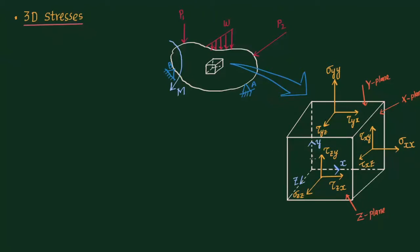I have only shown the stresses acting on these three planes. The opposite planes will also have the same stresses — for example, σxx acts to the right, so the opposite face has σxx to the left; τxy is upward here, so on the opposite face τxy will be downward. The opposite face will have the same kind of stresses but with the direction reversed.